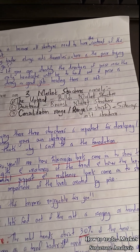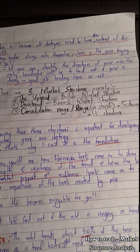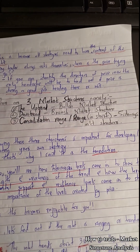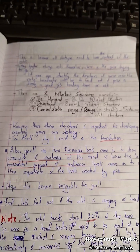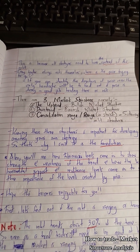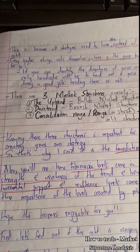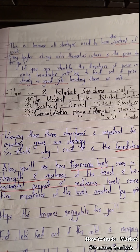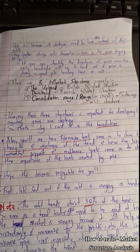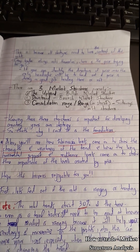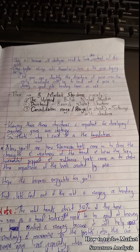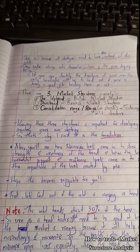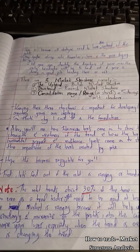There are three market structures: number one, the uptrend — the bullish market structure; number two, the downtrend — the bearish market structure; and number three, consolidation or range — the sideways market structure. Knowing these three structures is important for developing your own strategy. You'll also see how Fibonacci levels show the strength and weakness of a trend, and how key horizontal support and resistance levels show the importance of levels created by price.